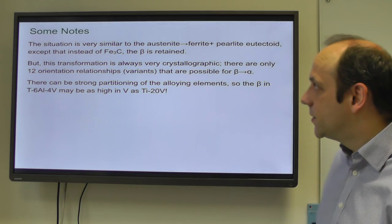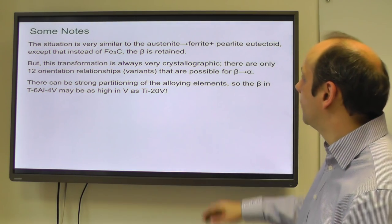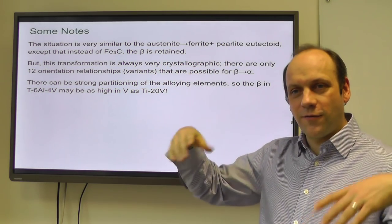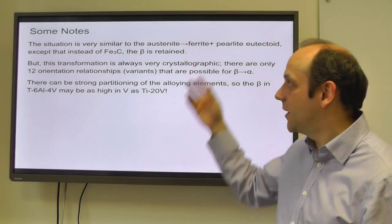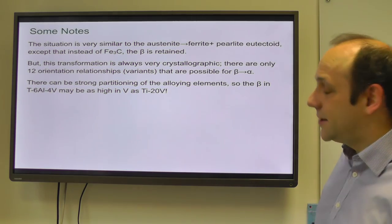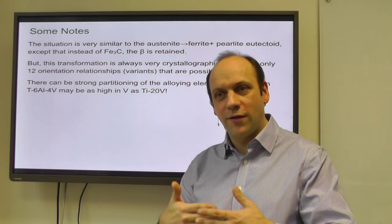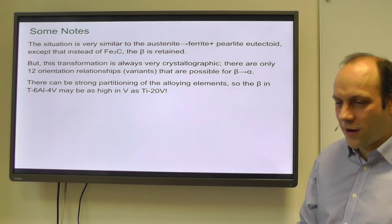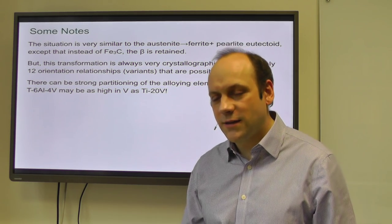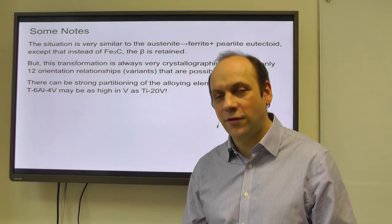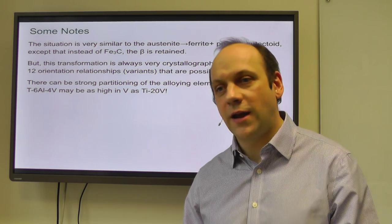The situation is really very similar to the austenite to ferrite plus cementite transformation in steels. There you cool through austenite, form some primary ferrite, and then at the eutectoid form pearlite - alpha plus Fe3C. In titanium, instead of Fe3C you just have alpha and beta with no eutectoid, but you end up with a similar situation of colonies forming and primary alpha forming. However, in titanium the transformation is always very crystallographic - there are only 12 orientation relationships possible for the beta-to-alpha transformation - whereas in steels you see a greater variety of orientations, so it's not as crystallographic.